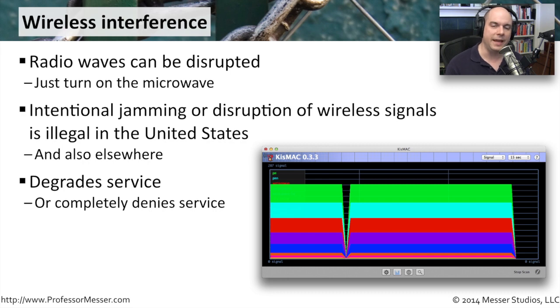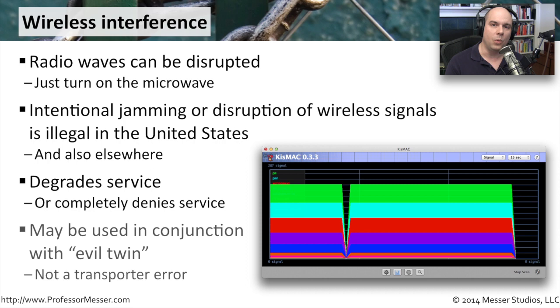Sometimes you'll see this used in the case of an evil twin. In our previous video, we talked about wireless evil twins and how they're used. If I can knock out the wireless signal to the primary real access point, then suddenly my evil twin becomes the standard connection to the network. It's yet another way to create a denial of service on one access point and have my evil twin become the actual access point used for everybody.